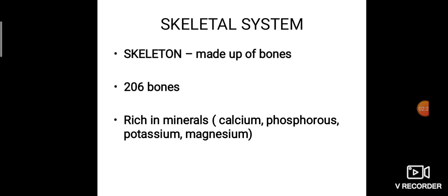The key minerals needed by bones are calcium, phosphorus, potassium, and magnesium. Have you ever noticed milk advertisements? If you drink milk you will get strong bones because milk contains a high amount of calcium. So to summarize the skeletal system: the skeleton is the framework of bones, there are 206 bones, and bones are rich in minerals.